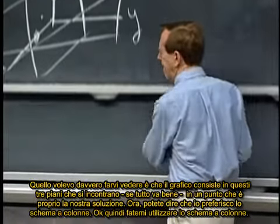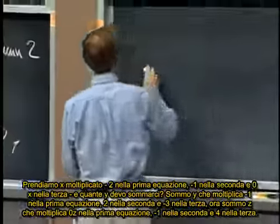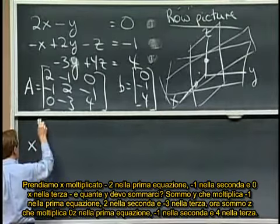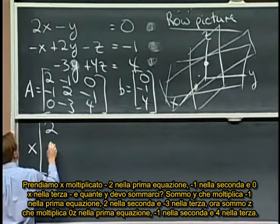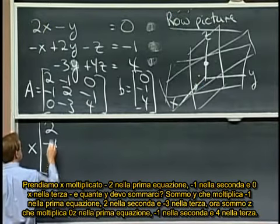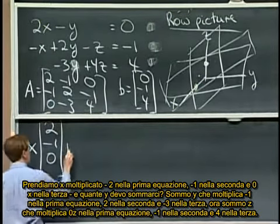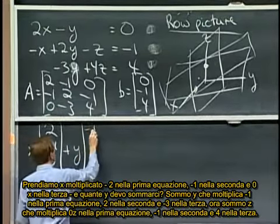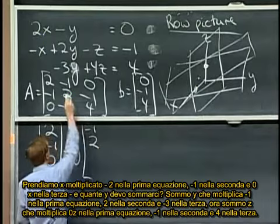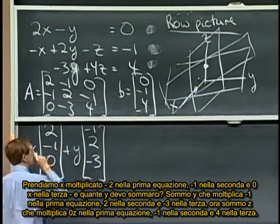Now, you can tell I prefer the column picture. So let me take the column picture. That's x times, so there were two x's in the first equation, minus one x, and no x's in the third. It's just the first column of that. And how many y's are there? There's minus one in the first equation, two in the second, and maybe minus three in the third. Just the second column of my matrix.